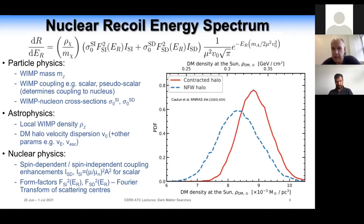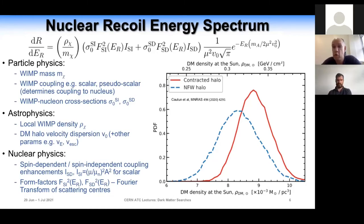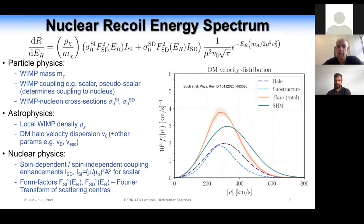In principle, you can also include a finite escape velocity and a non-zero velocity of the Earth relative to the halo, V_E. A recent result indicates 0.3 GeV per cubic centimeter is a reasonable assumption for dark matter density. The velocity distribution with recent studies giving 220 km/s for V0 in Maxwellian halos is again reasonable.